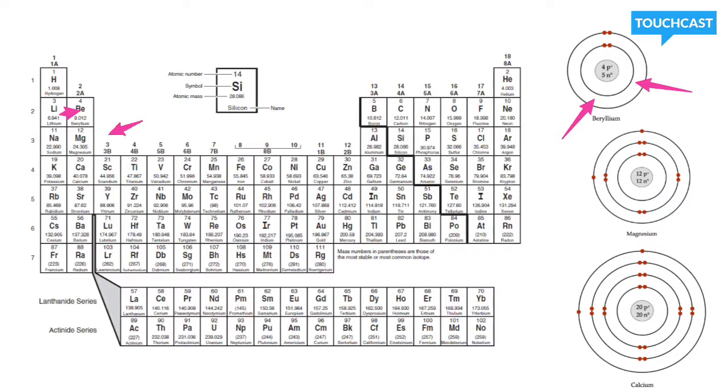On period 3, we have magnesium, and it has three different energy levels. Here on period 4, we have calcium, and it has four different energy levels.